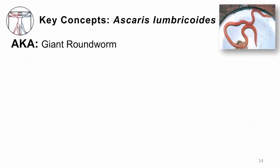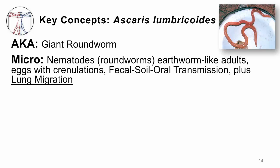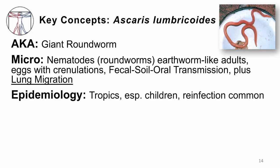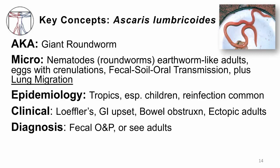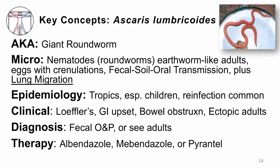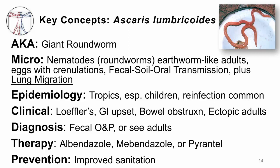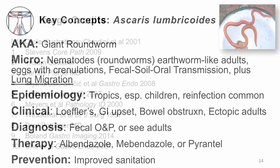These are the key concepts for Ascaris lumbricoides — also called the giant roundworm for totally obvious reasons. It is one of the roundworms with crenulated eggs. Transmission is fecal-to-soil-to-oral, and it has that unusual feature of lung migration early on. It happens everywhere in the tropics, especially in disadvantaged kids, and reinfection is common unless you can fix the sewage system in your community. Clinically, patients may present with Löffler's syndrome — wheeze, cough, eosinophilic pneumonitis, and bronchopneumonia — or a nonspecific GI upset, bowel obstruction, or in catastrophic conditions, adults going ectopic. Diagnose by checking stool or examining an adult worm the patient brings in. Treat with any of the listed medications, but it's all about prevention and improving sanitation in the community. Thank you for your attention.